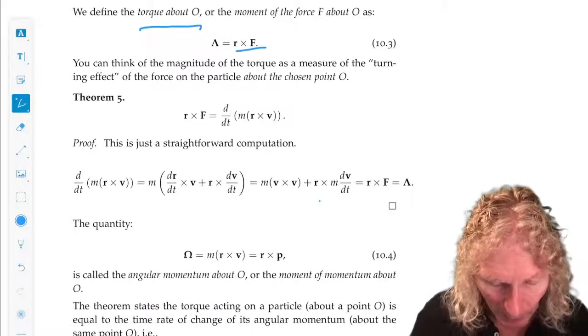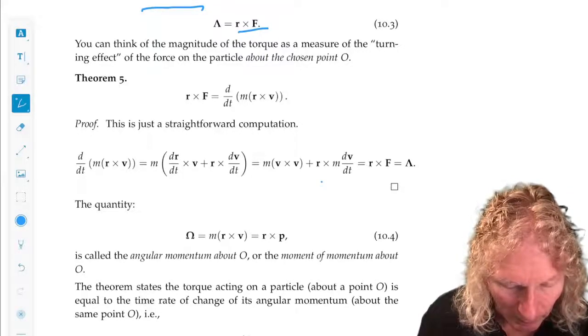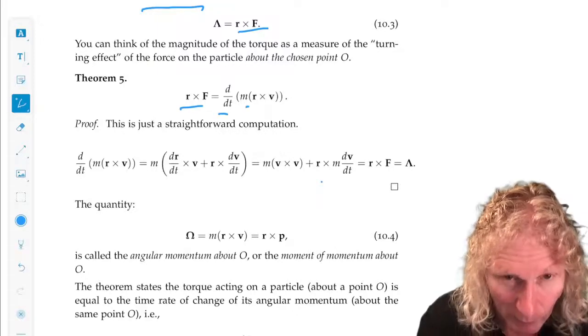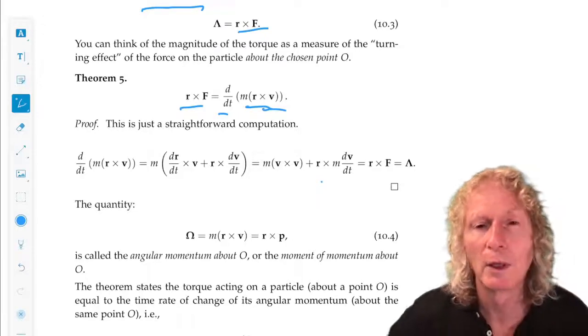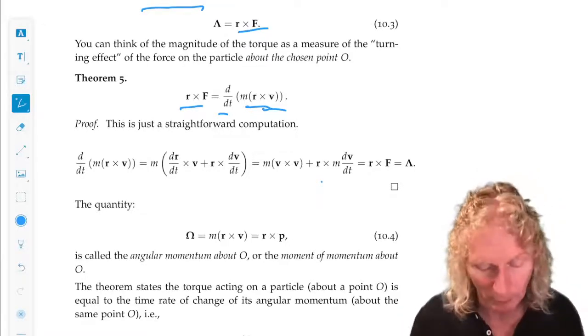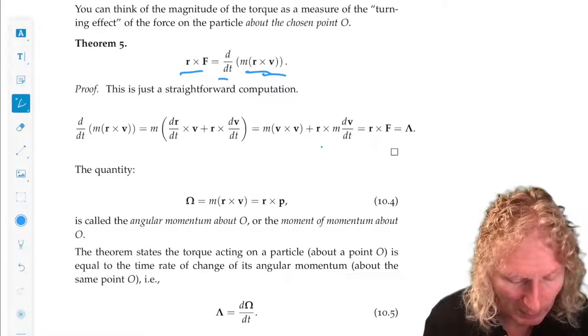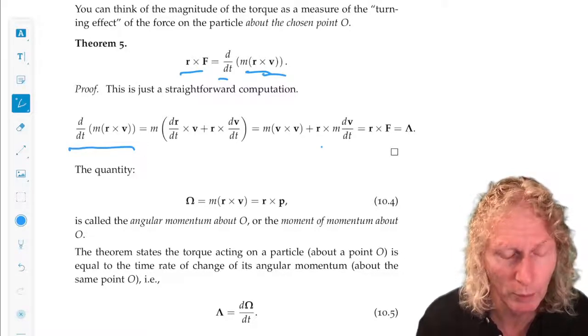So then we have this theorem that the torque is the time derivative of this quantity, M, remember the constant mass M we're assuming, R cross V, where V is the velocity vector. This is a straightforward computation. D by dt of M R cross V, M is a constant we can just pull it out. For the cross product we have a product rule.